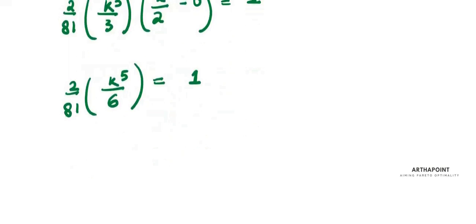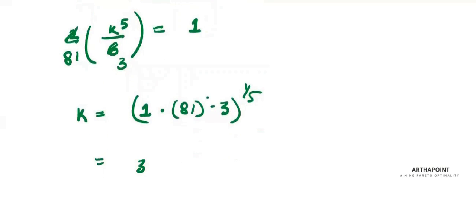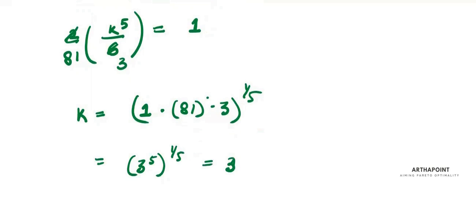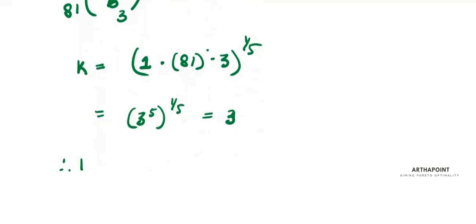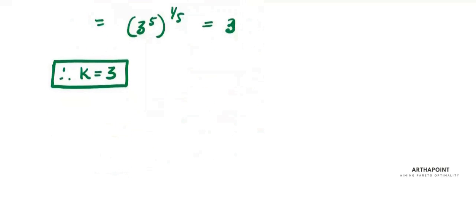So, the value of k will be, this just gets cancelled, 81 into 3 to the power 1 by 5. So, this is 3 to the power 5 to the power 1 by 5, so this is 3. So, the answer for k will be 3. Now, write down the second question.